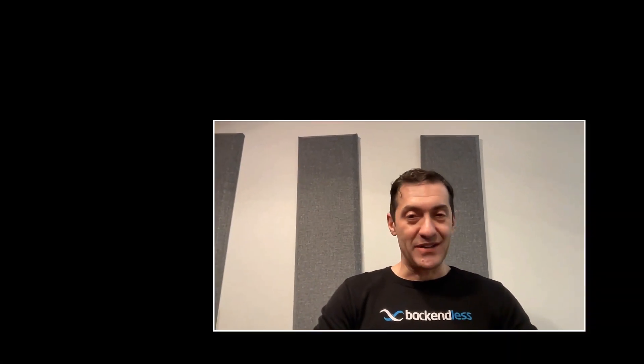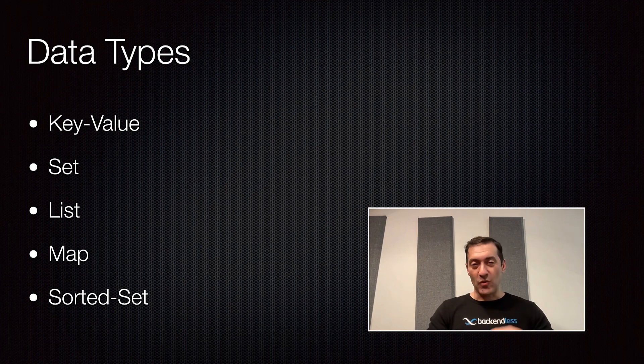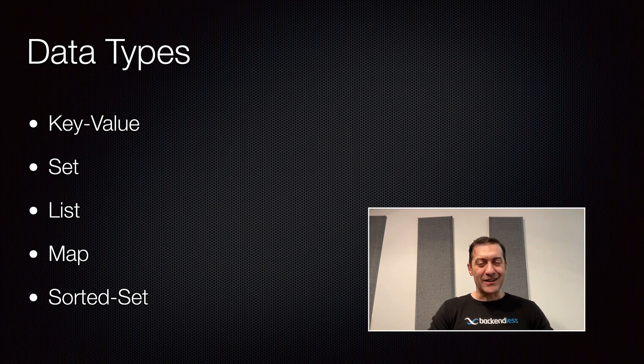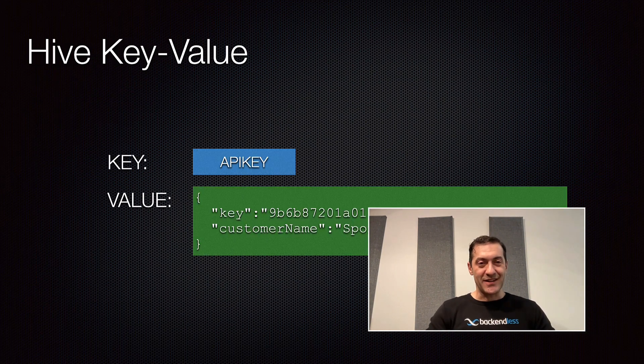What's cool about Hive is it supports different data types. Those key-value pairs can be categorized in different storage types that we call buckets. There are five different storage types or buckets that Hive supports: basic key-value, set, list, map, and sorted set. Key-value is really just one key, one value. Set is where one key may have a set of data. List is similar to set, but I'll describe the differences. Map is where one key may contain a collection of data items. And there is a sorted set. I'll start drilling down further.